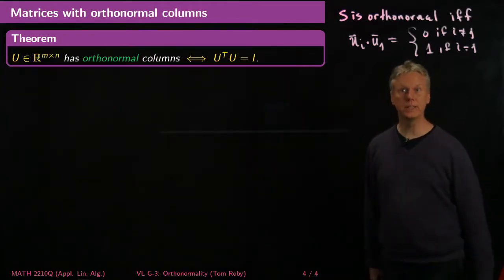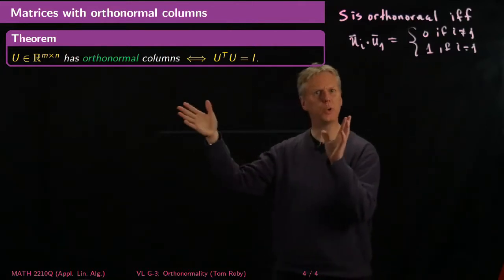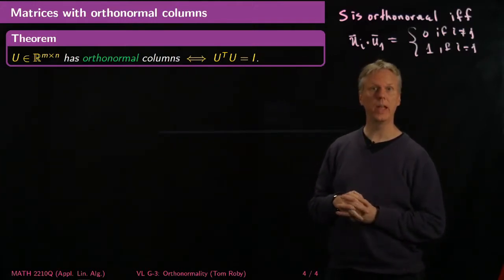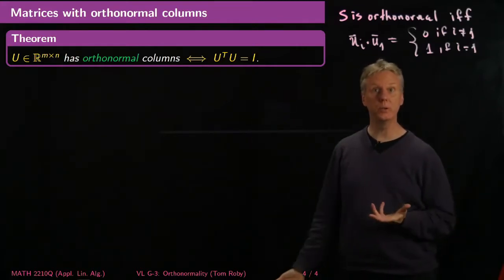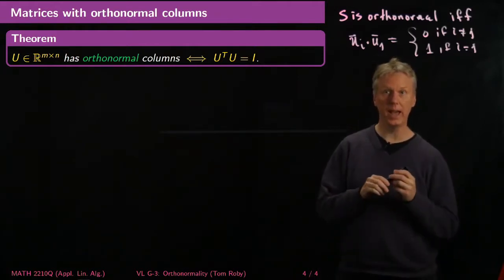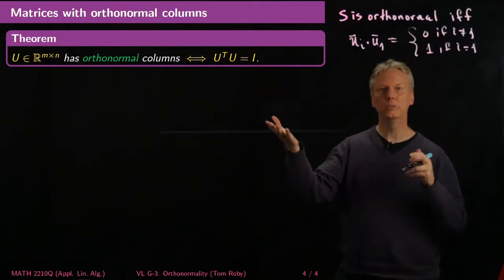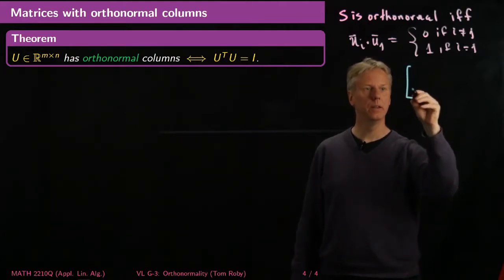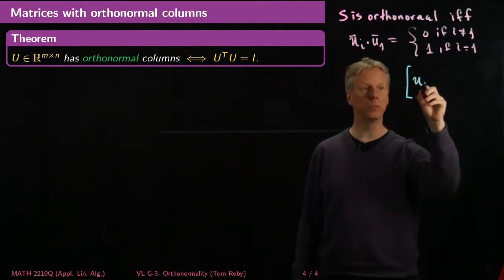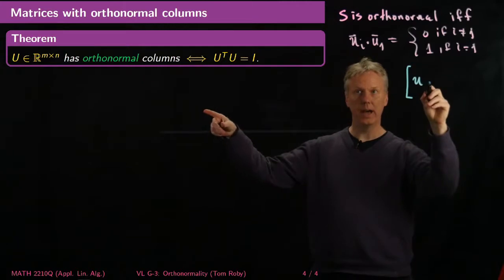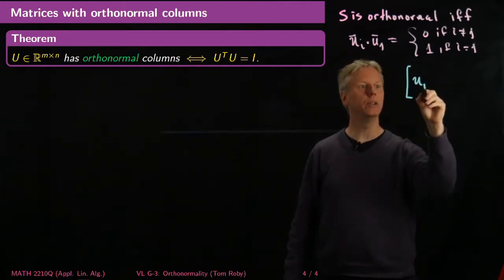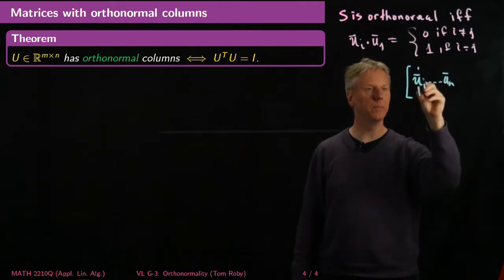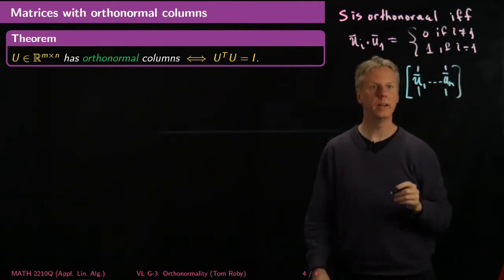Now let's consider matrices — not necessarily square — that have orthonormal columns. I claim this happens if and only if U^T U equals the identity. To see why, think about U as being composed of column vectors u_1 through u_n. If it's an m-by-n matrix, I've got n column vectors each of length m.